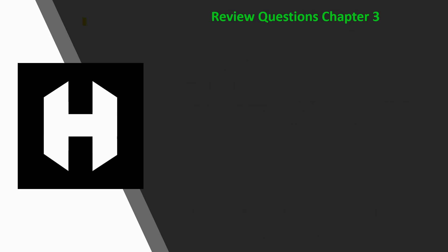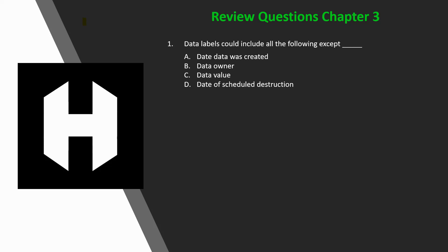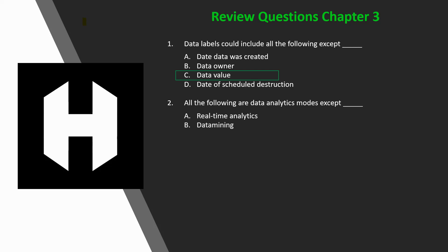Let's jump into the review questions for chapter 3, data classification. Question one: data labels could include all of the following except for what? A) the date data was created, B) data owner, C) data value, or D) date of scheduled destruction. If you said C, data value — you would be right, because it might not be information we want to disclose to anyone who does not have the need to know.